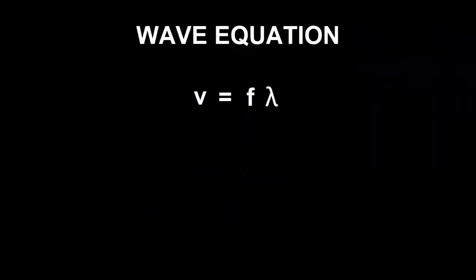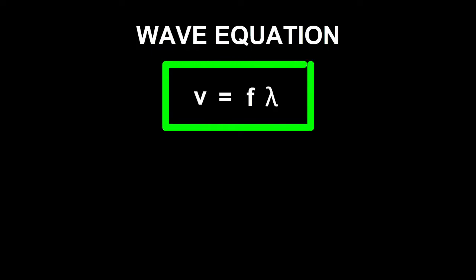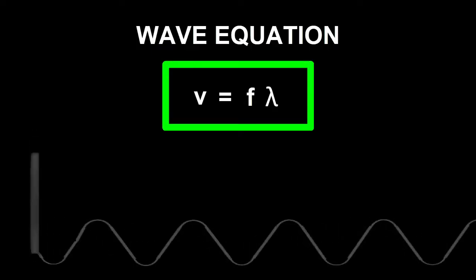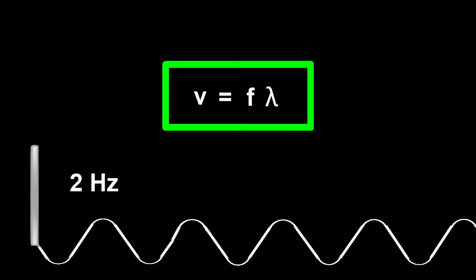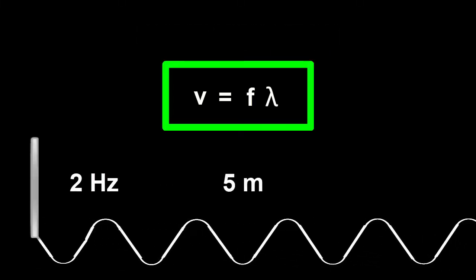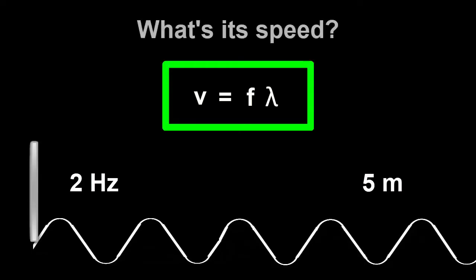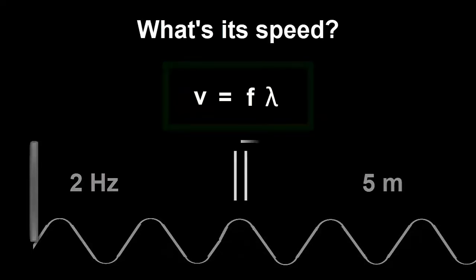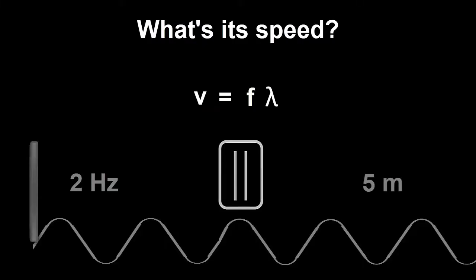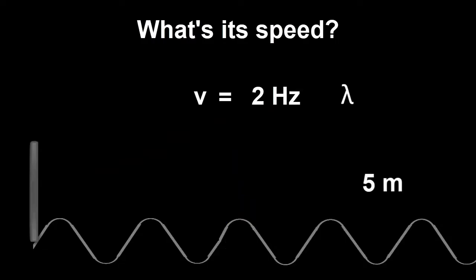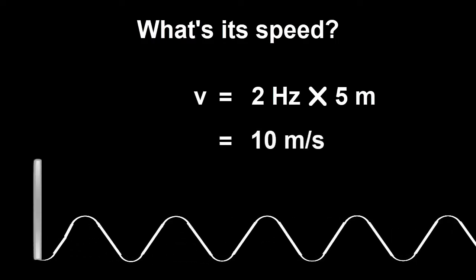v equals f lambda. Let's give it a test drive with a two hertz wave, which has a wavelength of five meters. What's its speed? Easy as pi. Just make f equal two hertz and lambda five meters and multiply them. The wave must be traveling at 10 meters per second.